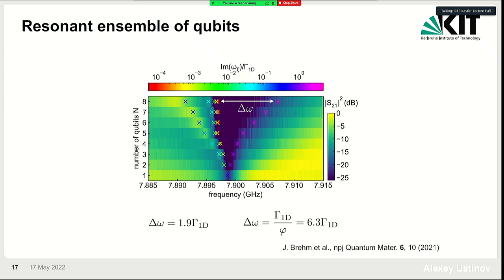This plot shows S21 transmission as a function of frequency as qubits are brought one by one into resonance. The dark area is the forming band gap in the transmission spectrum, and the crosses are predicted eigenvalues — the superradiant mode and the subradiant modes on the left. For our array, the width of the band gap is about twice the individual qubit linewidth set by radiation; for an infinitely long array, theory predicts an increase up to 6.3 times, limited by our sample geometry.